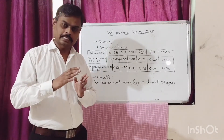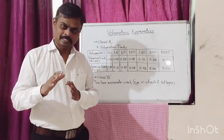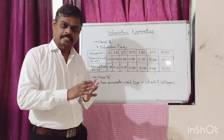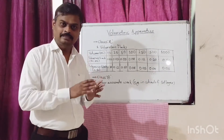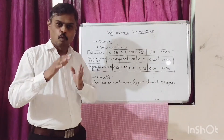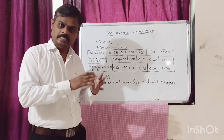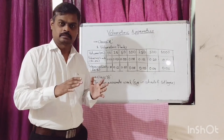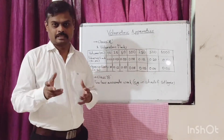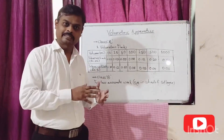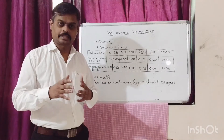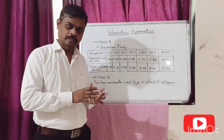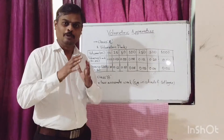Why is borosilicate glass used for making volumetric apparatus? Because borosilicate glass is resistant to thermal shocks and chemical attacks. It can sustain different temperatures and is inert with respect to different chemicals. Borosilicate glass does not interfere chemically during the analysis. Hence, borosilicate glass is used for making volumetric apparatus.